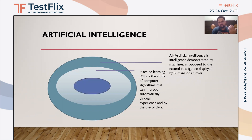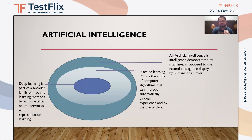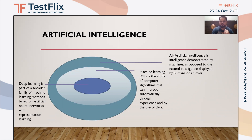Then there is another subset of machine learning which we call deep learning — broadly a study around artificial neural networks and how we can use representation learning out of it. That's overall what artificial intelligence is all about.